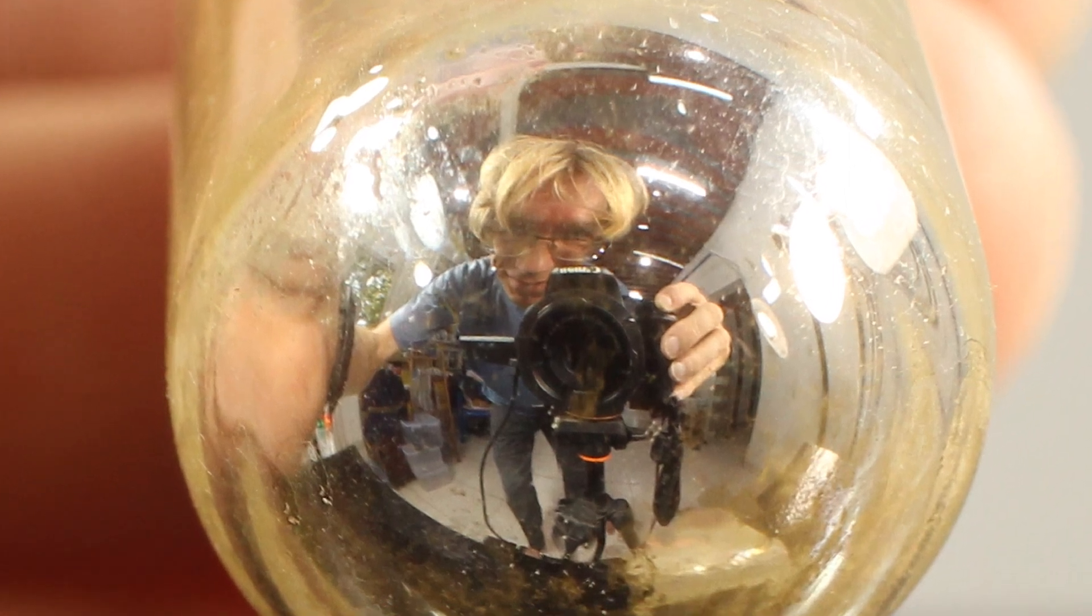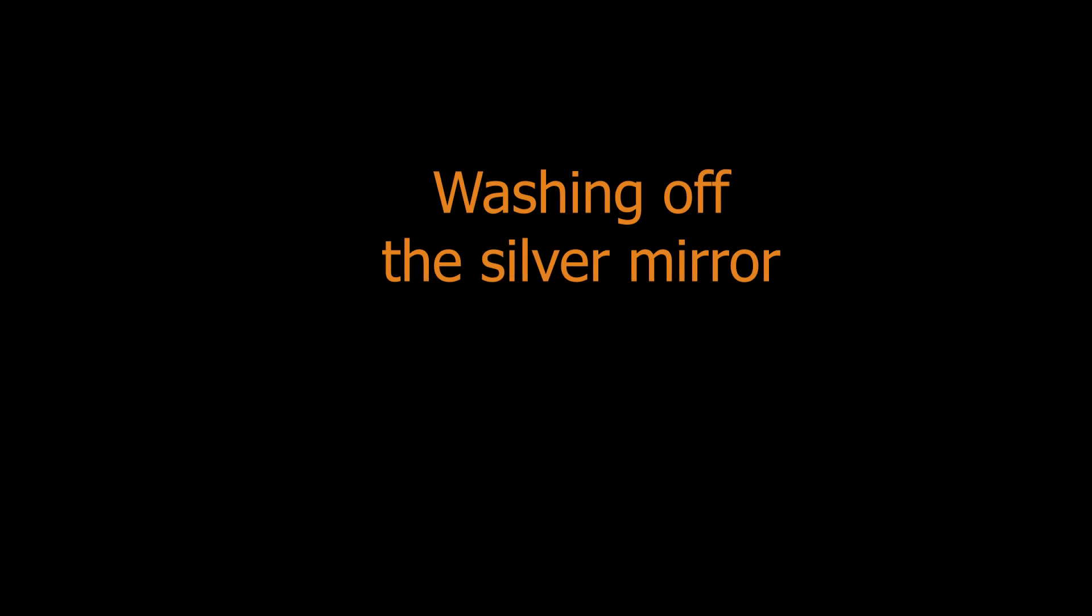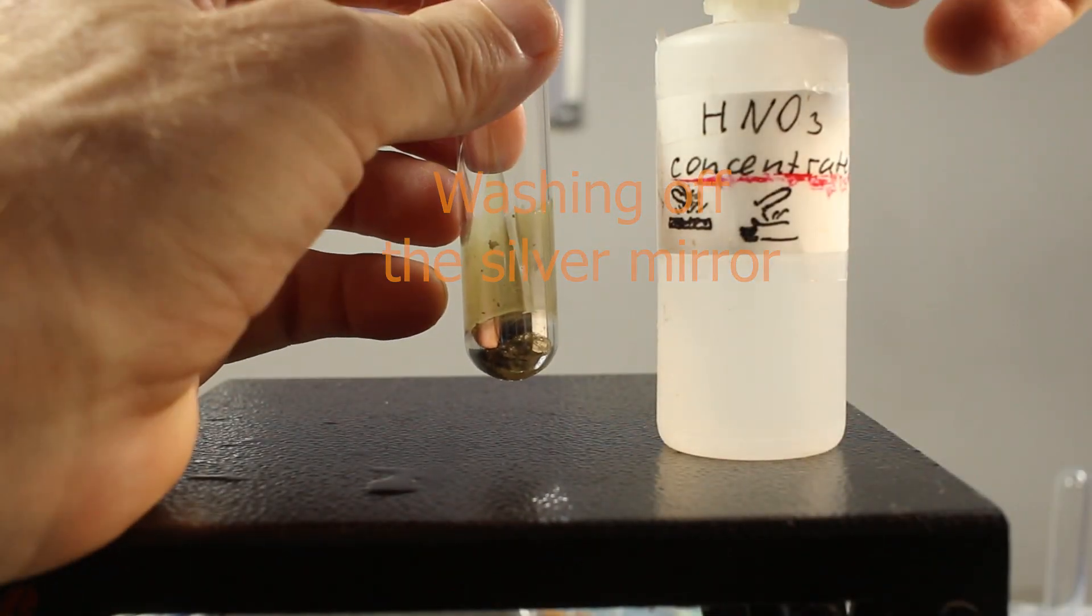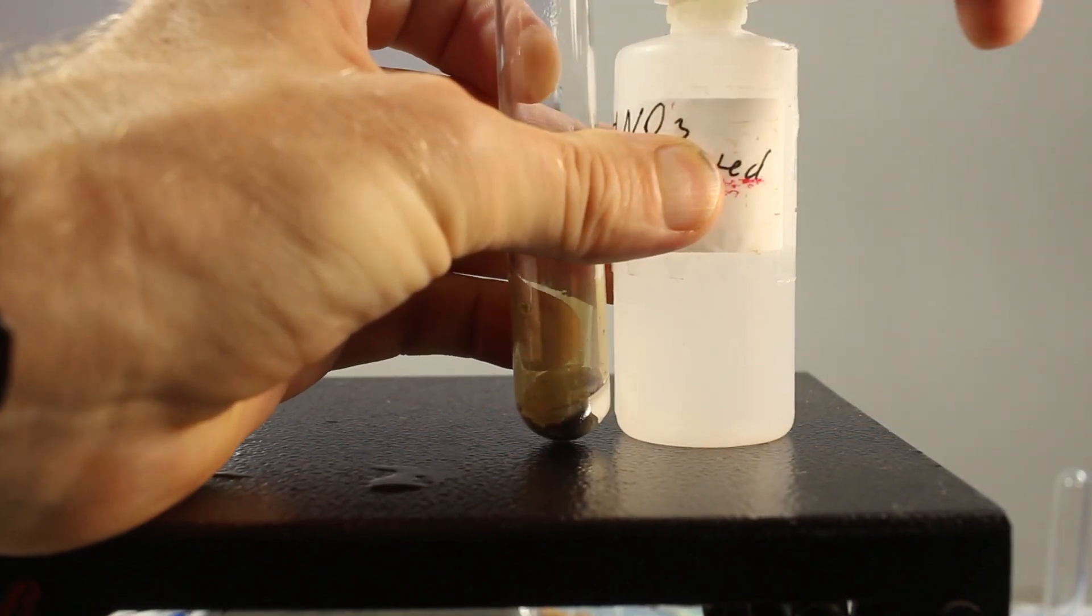Okay, but after each test, we have to clean up. And silver mirror is quite persistent sometimes. What do we do? Our best friend, concentrated nitric acid.